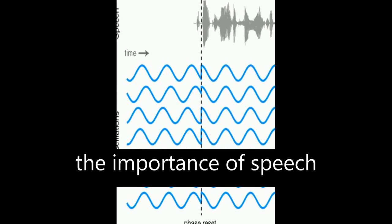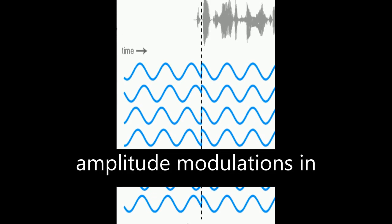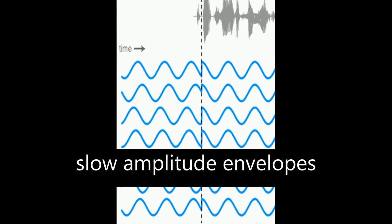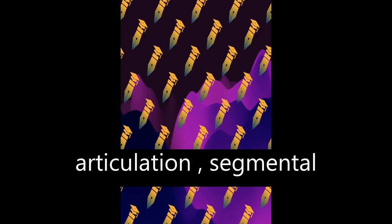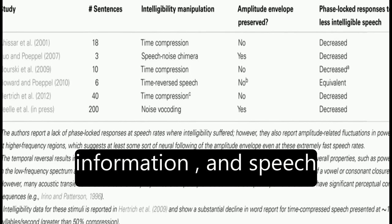The article discusses the importance of speech rhythm and how it is conveyed through amplitude modulations in slow amplitude envelopes. These modulations contain important markers for place and manner of articulation, segmental information, and speech rate.